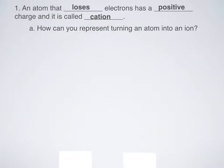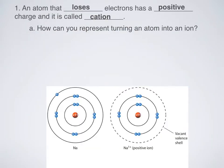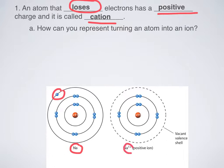Let's talk about cations. Any atom that loses electrons has a positive charge, because you're losing something negative and that makes you more positive, and that's called a cation. Here's a picture of the element sodium. Let's say I lose an electron — this little electron zipping around the outside just gets lost, it goes somewhere else and attaches itself to another element. So I have a plus one ion now — I've lost an electron.